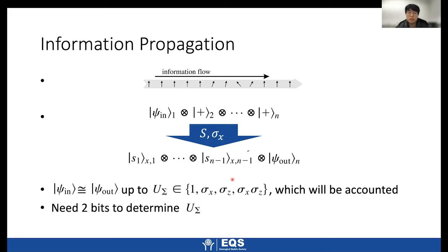And it is interesting that initial state and output state is equivalent up to local unitary, which is this. We can calculate u sigma, which is either identity or Pauli X, Z, and XZ operator. We can calculate u sigma with only two bits, which is the output of our measurement results.